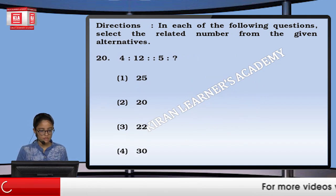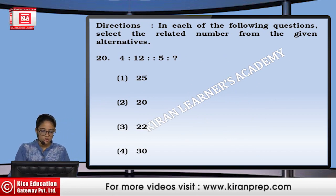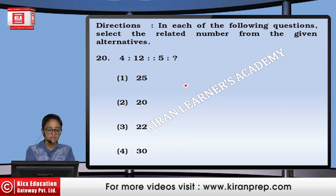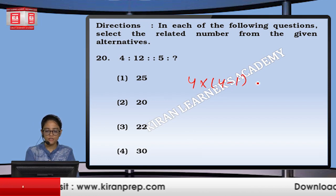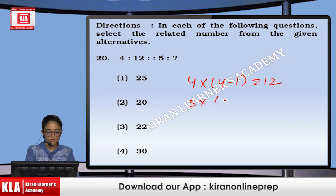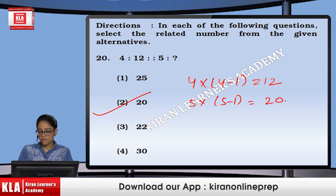Next, 4 into 12. If we look at 4 into (4 minus 1), that gives me 12. Similarly, 5 into (5 minus 1) gives us 20. So the option will be the 2nd one.